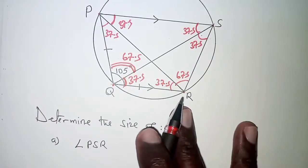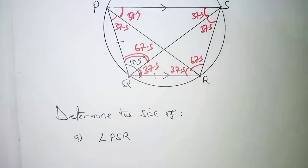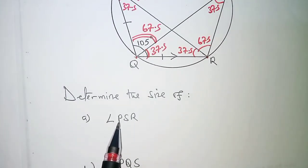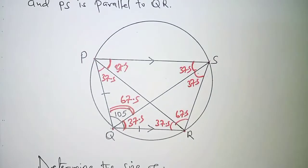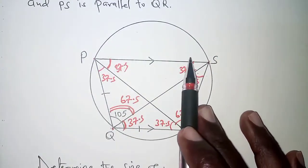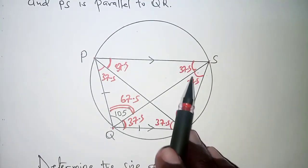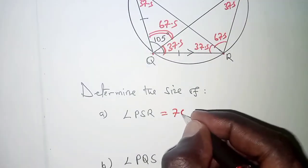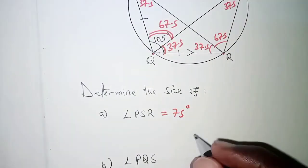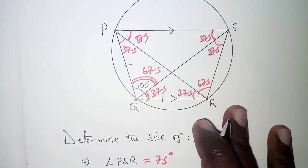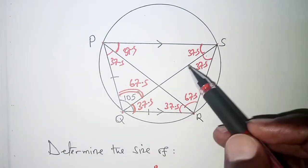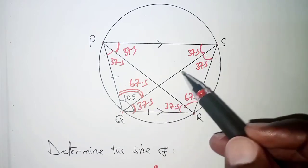I believe we have done the math we could have done so the next thing we are told to determine the size of angle PSR. PSR is this PSR so we have it right here that is 37.5 plus 37.5 that should give us 75 degrees. So if you are to be asked about the reasons then you can say opposite angles of a cyclic quadrilateral add up to 180.